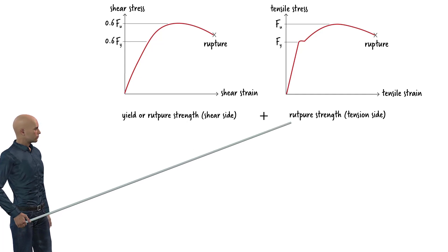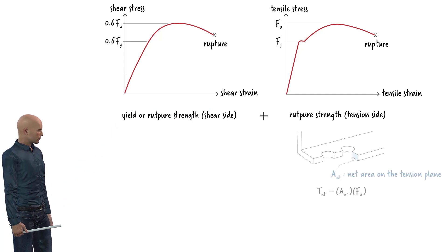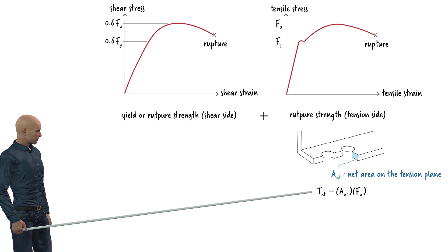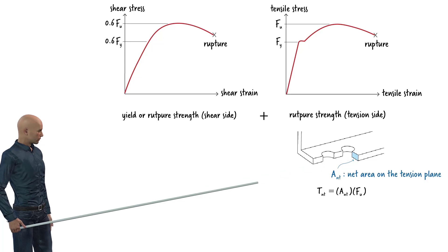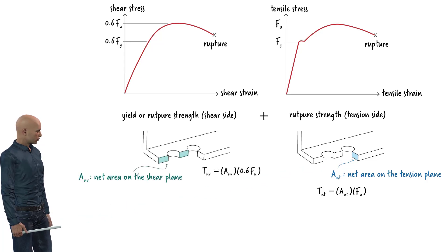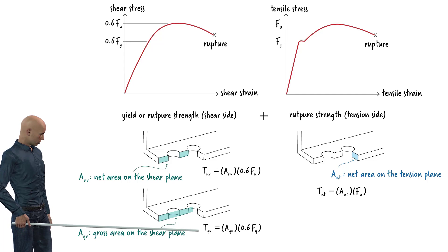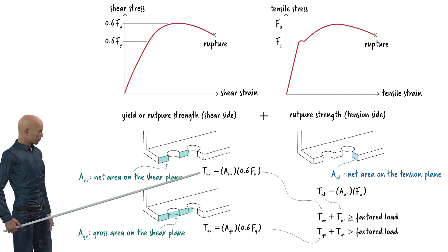The rupture strength in the tension direction and the yield or rupture strength in the shear direction. The rupture strength in the tension direction equals F sub u times the net cross-sectional area along this plane. The rupture strength in the shear plane can be written as 0.6 F sub u times the net area along the shear plane. And the yield strength in the shear plane is 0.60 Fy times the gross area along the shear plane. The smaller of these two values constitutes the shear component of the block shear strength.